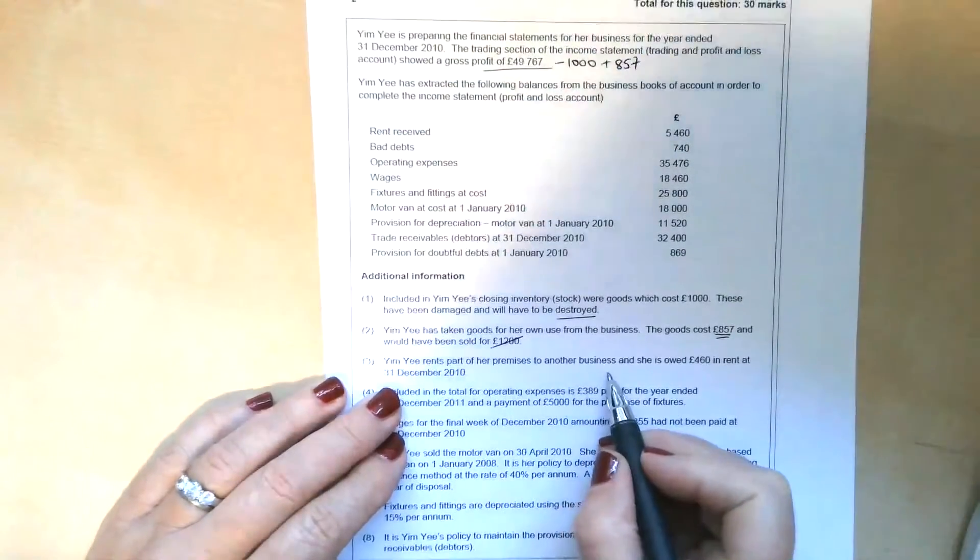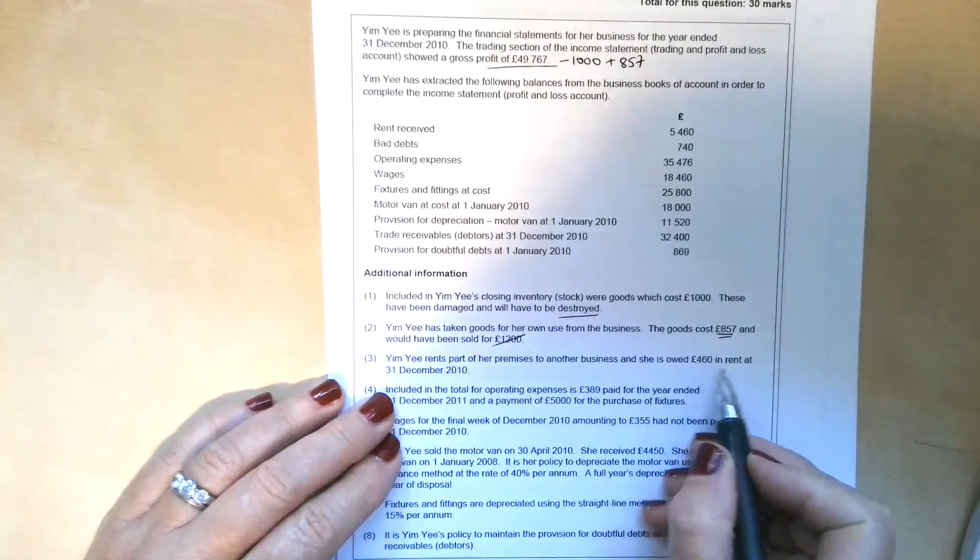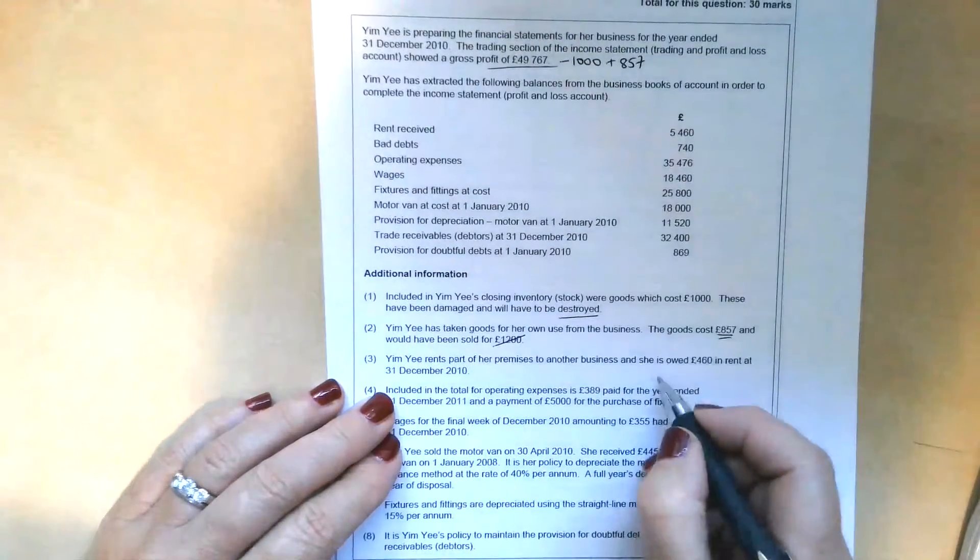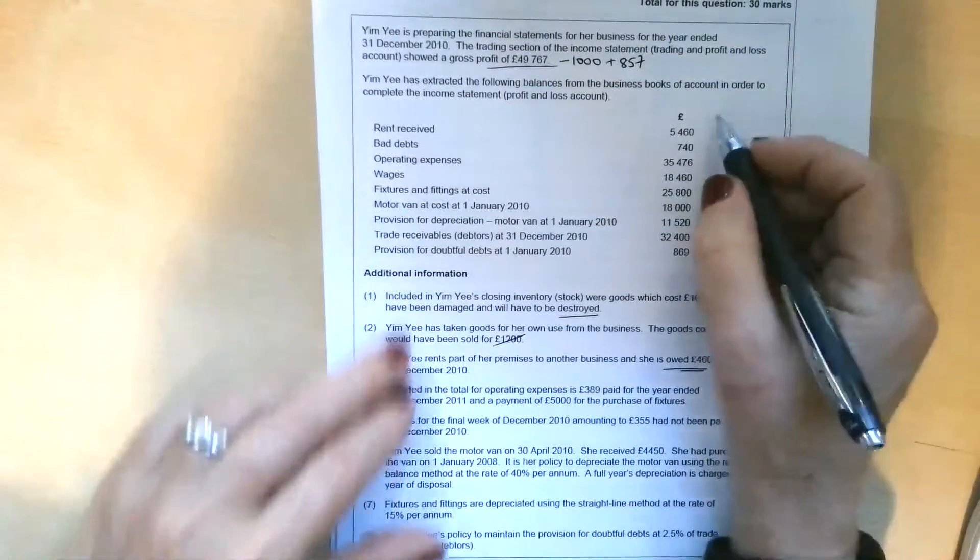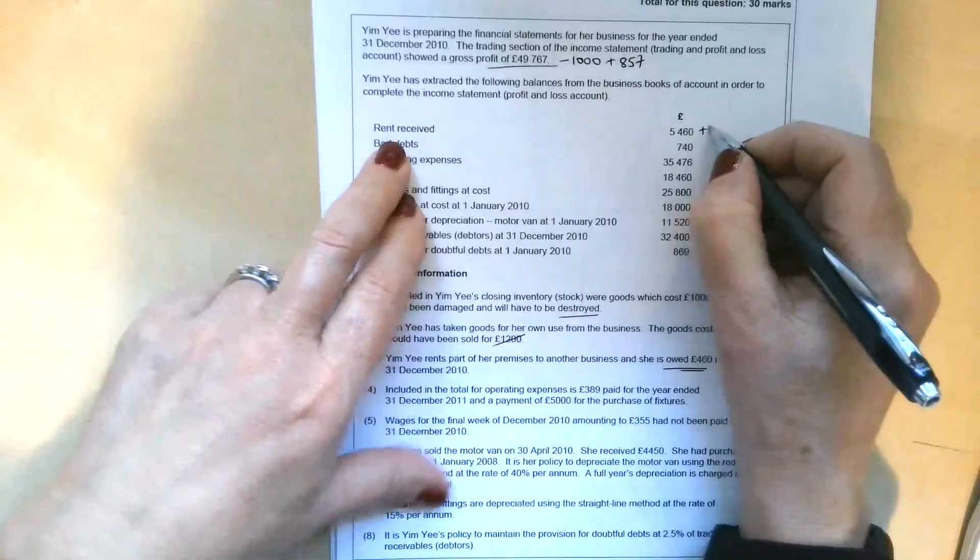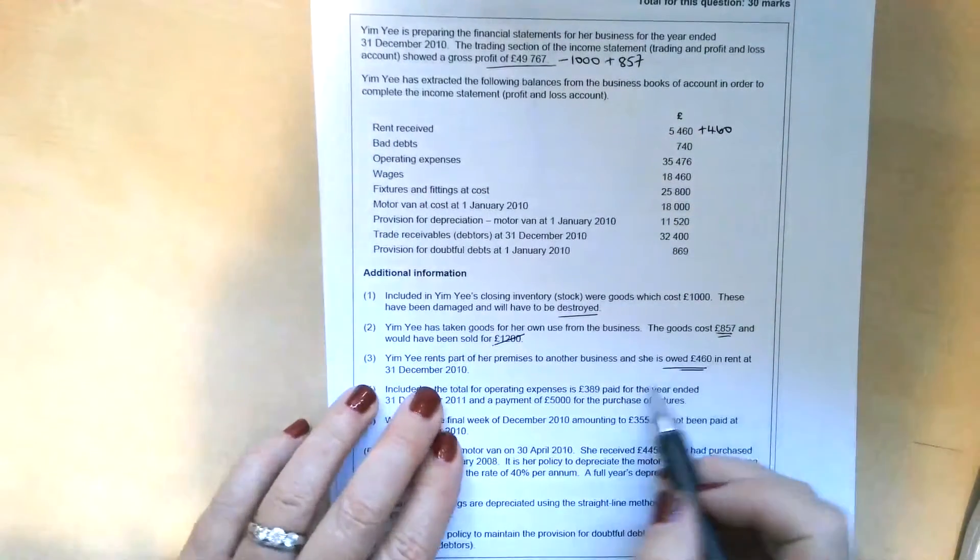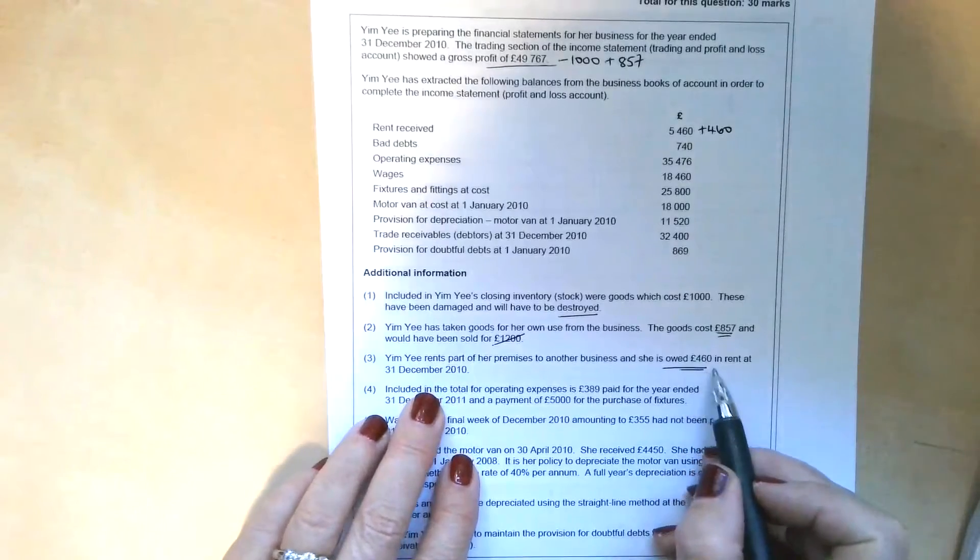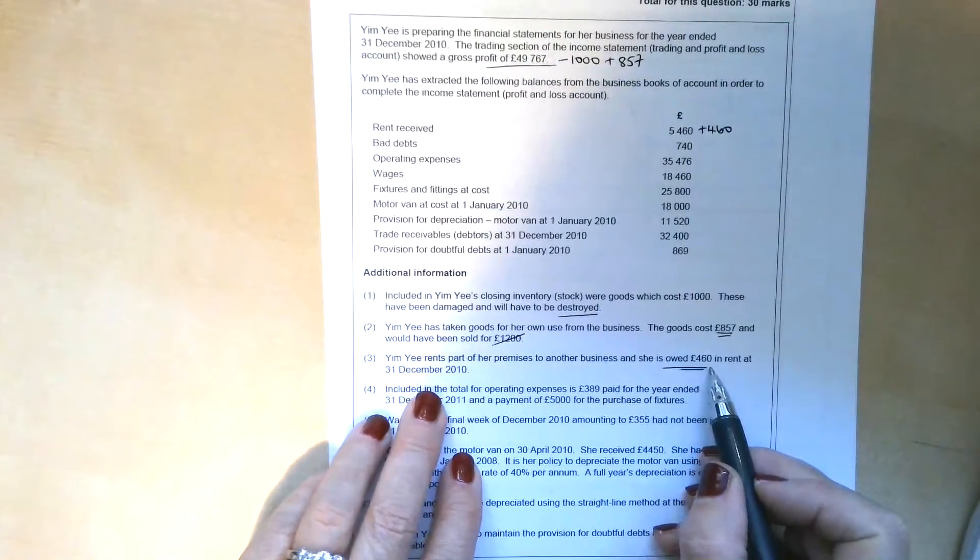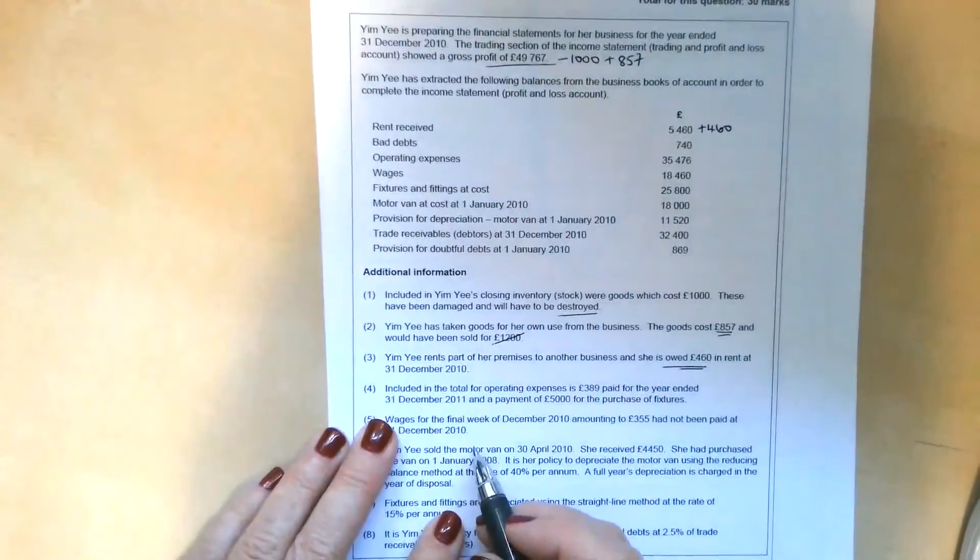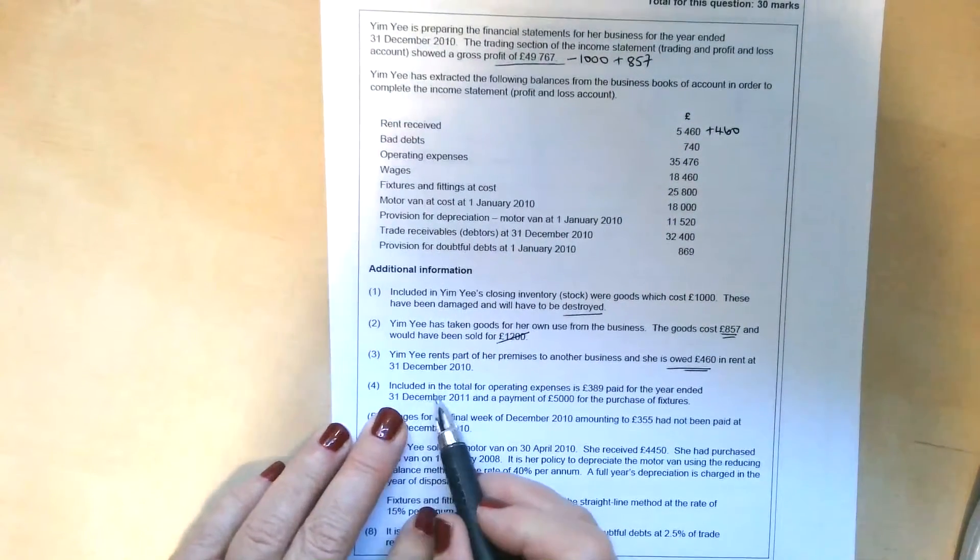Yim Yi rents part of her business to another business, and she's owed £460 in rent at the 31st of December 2010. So this is accrued income. We add it to the income. So we've got rent received up here. We're going to add £460. That's now going to become rent receivable technically. But the £460 would be included as a current asset on the statement of financial position. Obviously we're not asked to do that bit, but just for completeness.